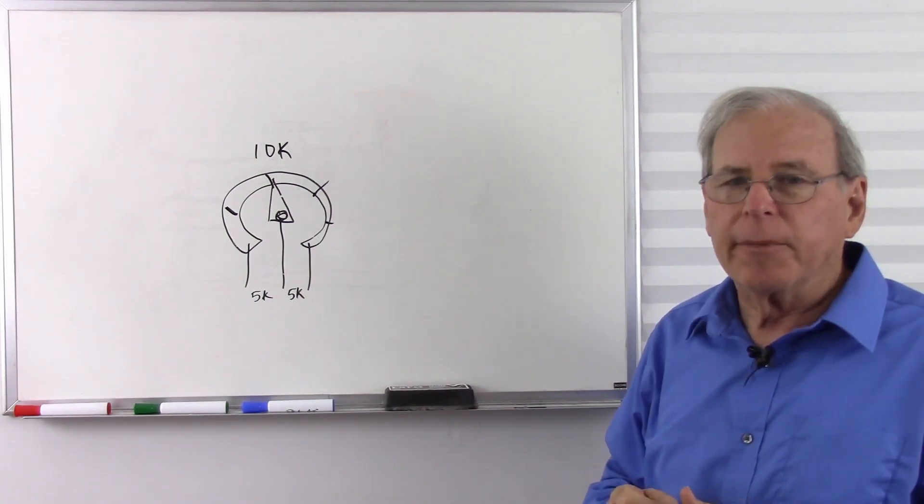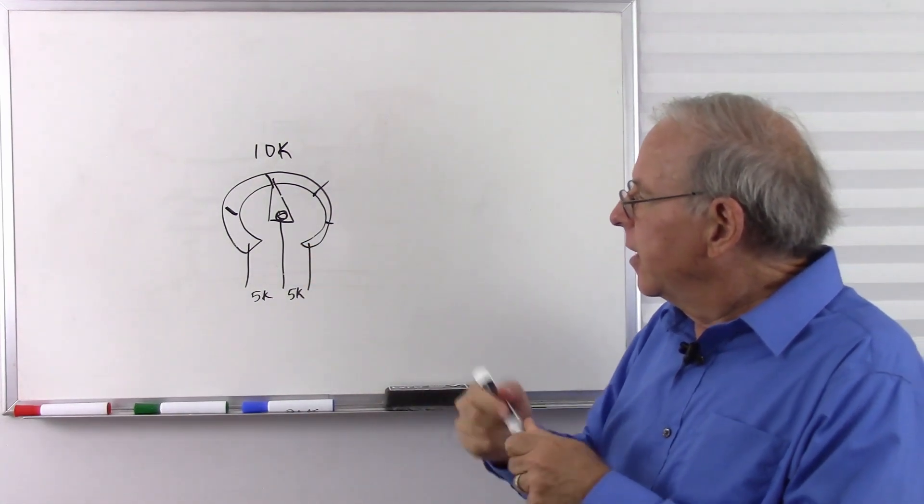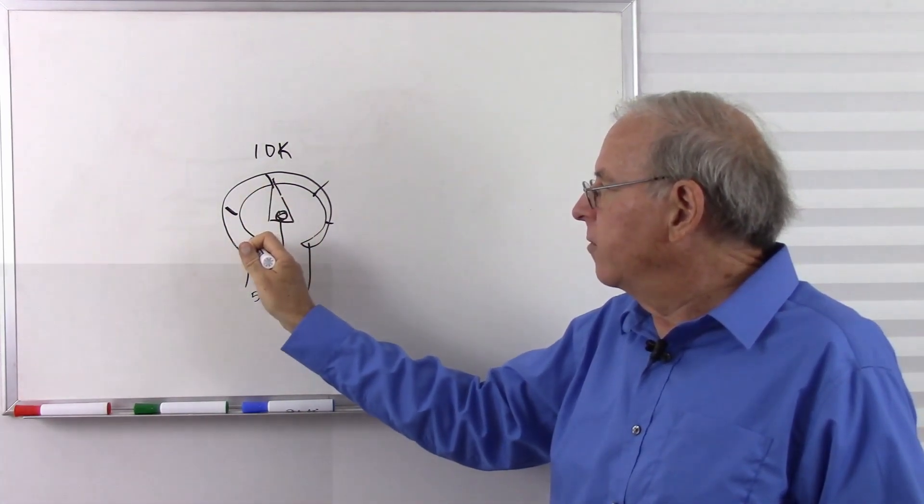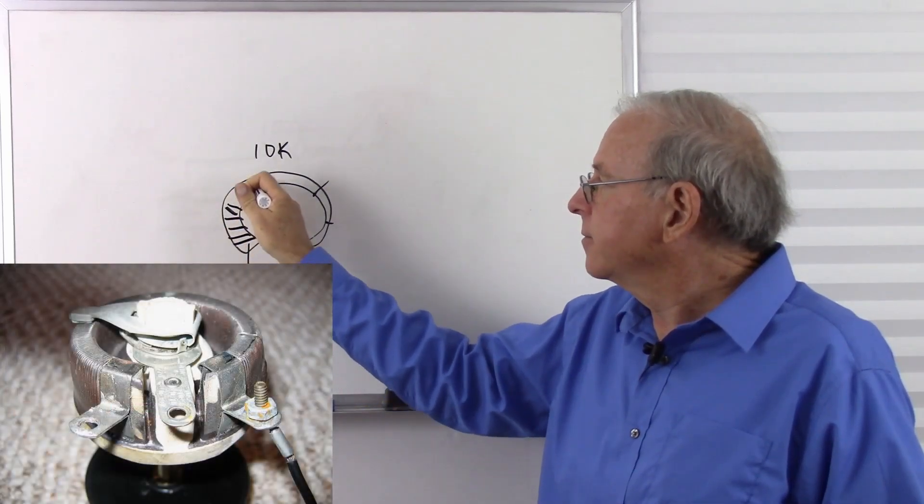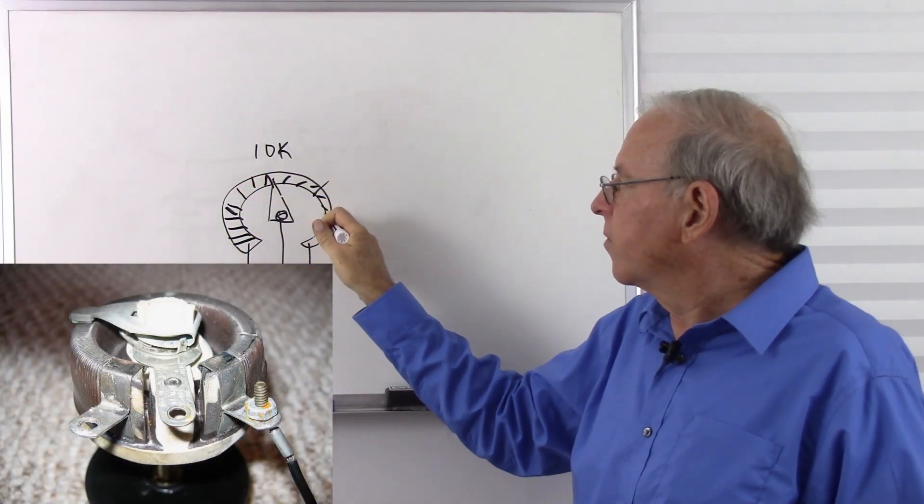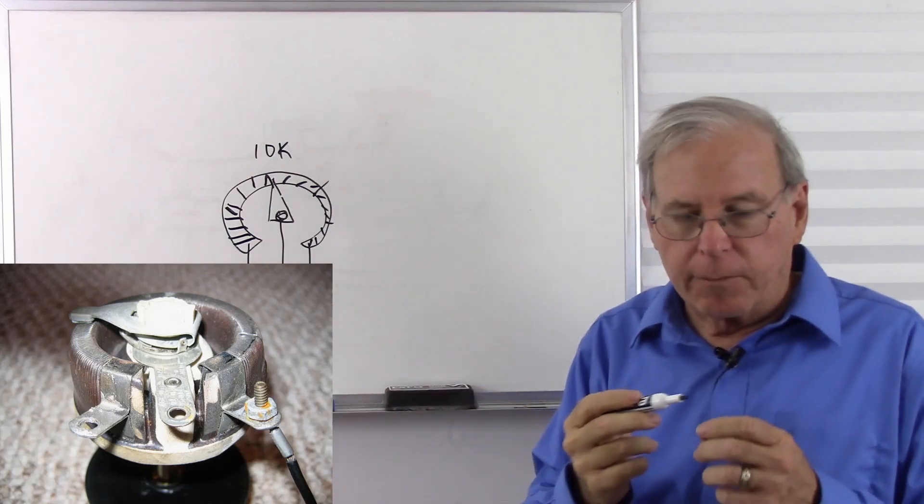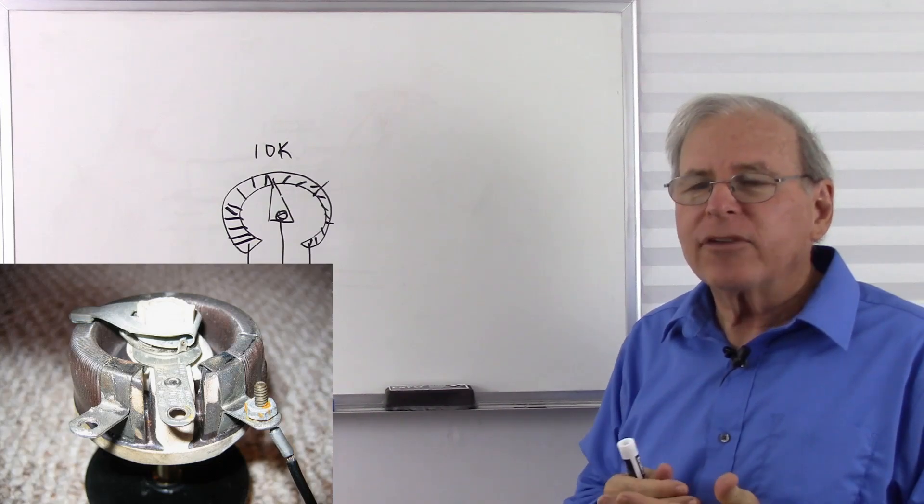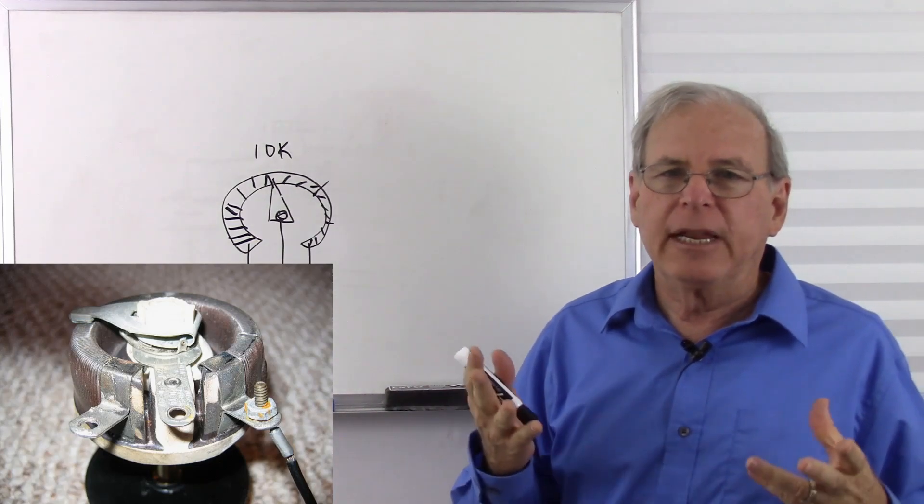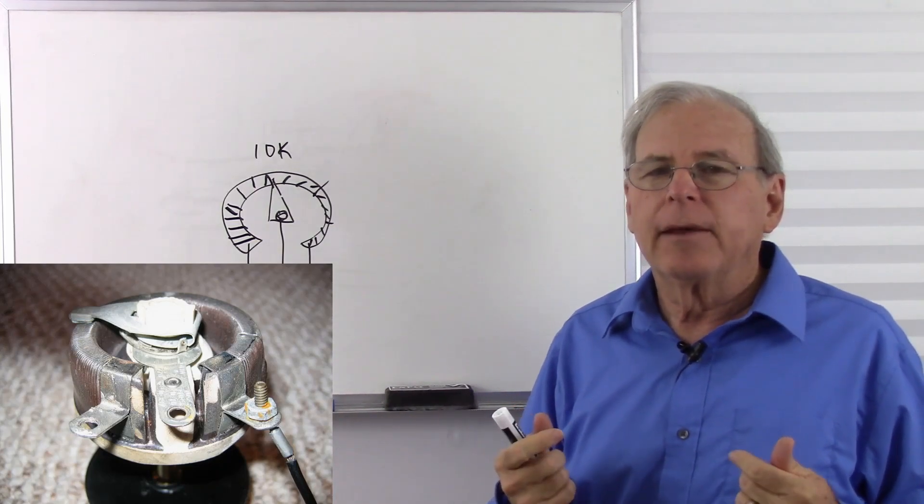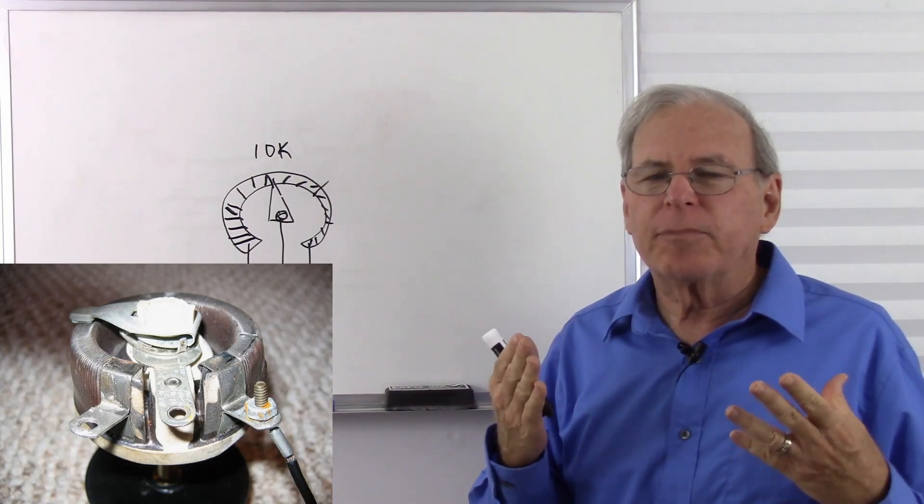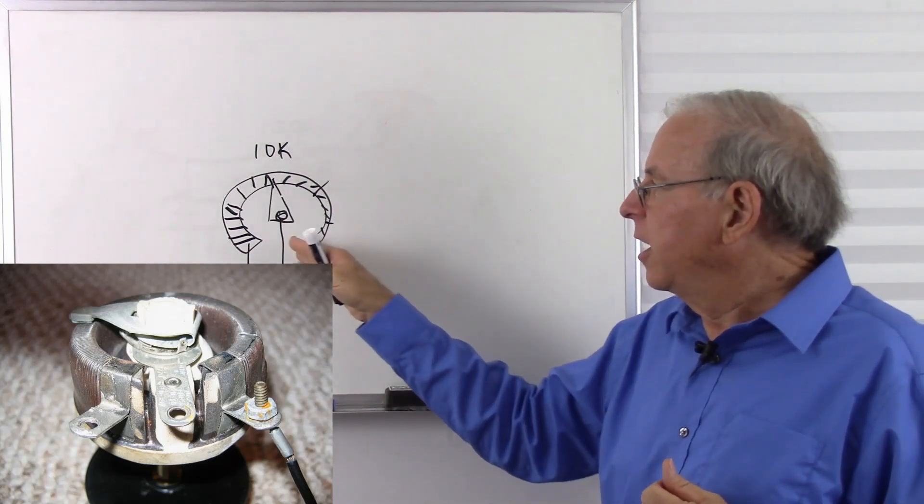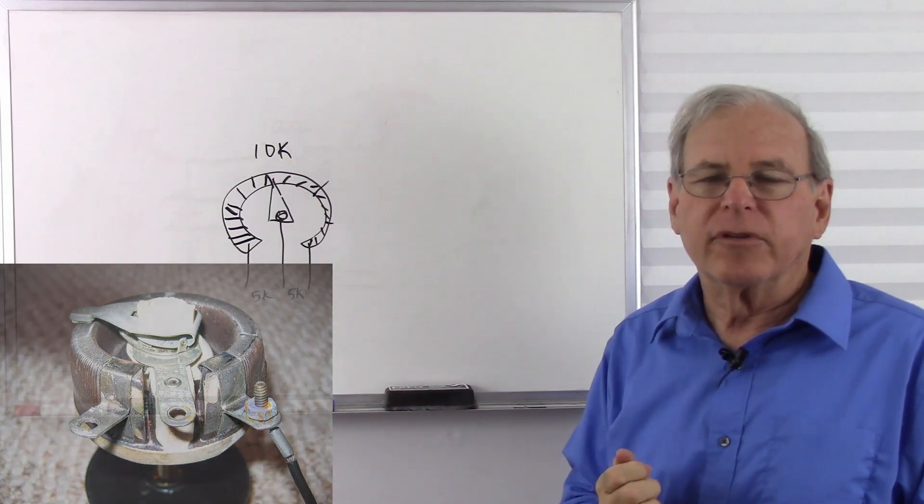Another type of potentiometer is made such that we have a ceramic substrate with a wire wound around it. And these are usually used for high-power potentiometers. And in this case, they're often called a rheostat. So rheostat may be used to mean any variable resistor, but it's more specifically used to mean these heavy wire wound variable resistors.